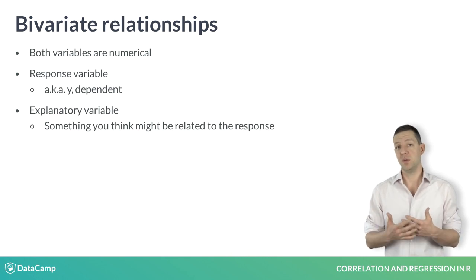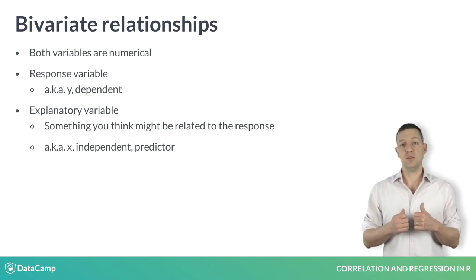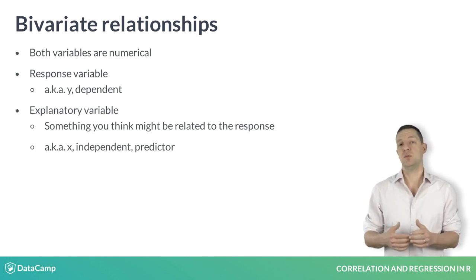We typically denote any explanatory variables with the letter X. In this course, we will have a single explanatory variable, but in the next course, we will have several. In other fields, these can be called independent or predictor variables.